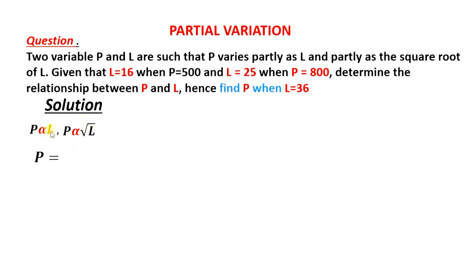So for the first part, we are going to introduce the coefficient of L here, that is KL, and then because it is partial variation, we add and then the next term, we are going to introduce the coefficient of the square root of L and that is M, so that we have M root L. We can call this equation 1.